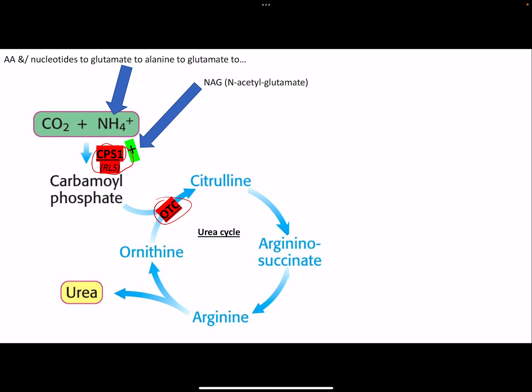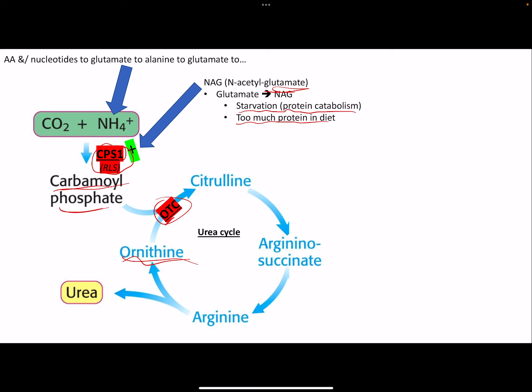CPS1 is activated by NAG, which is essentially glutamate with an acetyl compound on it. When would we have a lot of NAG? If there's too much protein in the diet or starvation is occurring - you have a ton of nitrogen, so you need more urea cycle activity in the liver to safely convert it to urea for excretion. We then take carbamoyl phosphate and combine it with ornithine via ornithine transcarbamylase to make citrulline, which moves to the cytosol.